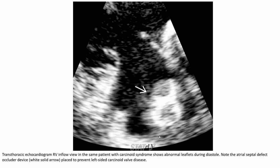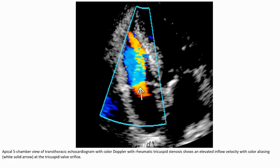This image with carcinoid syndrome shows abnormal leaflet motion during diastole. Note the atrial septal defect occlusion device placed to prevent left-sided carcinoid valve disease. The same echo image with color Doppler shows problematic tricuspid stenosis with elevated inflow velocity and tricuspid valve involvement.